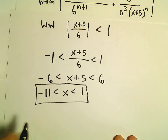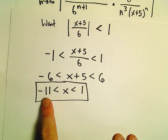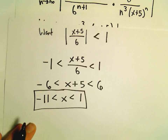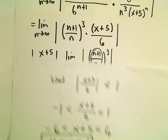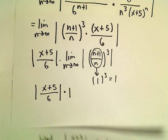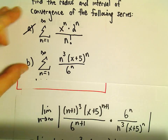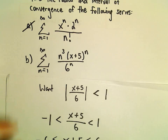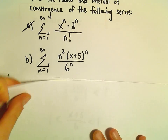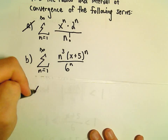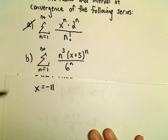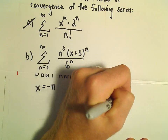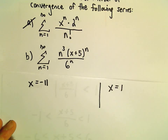So I know for sure the series converges for any number between negative 11 and 1, but we have to check the endpoints separately to see whether or not they are included. So we'll go back to our original series and check x equals negative 11 and x equals positive 1 individually.